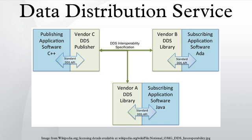Version history: DDS 1.2, DDS 1.1, DDS 1.0. The DDS specification describes two levels of interfaces: a lower DCPS level that is targeted towards the efficient delivery of the proper application, and an optional higher DLRL level which allows for a simple integration of DDS into the application layer.